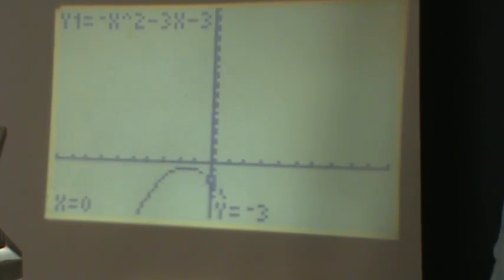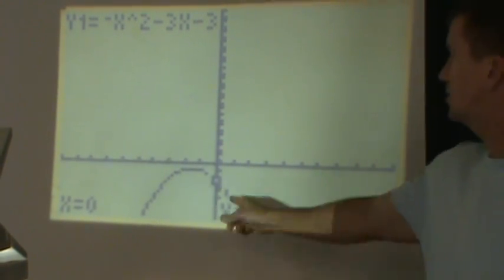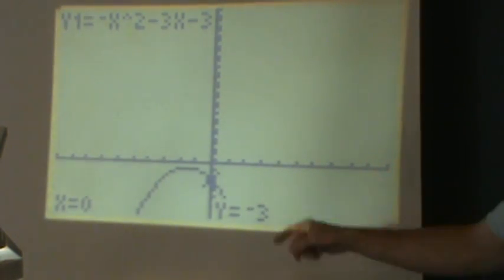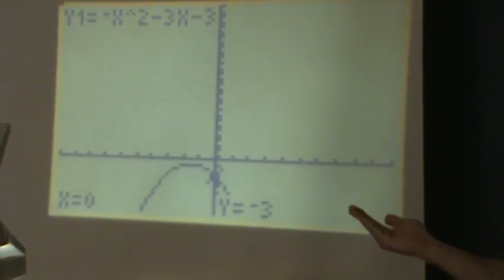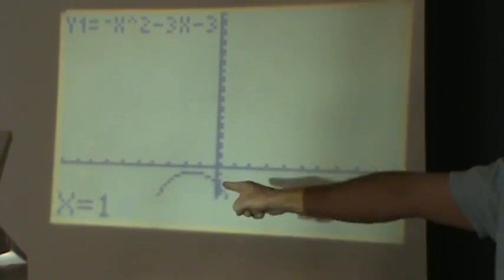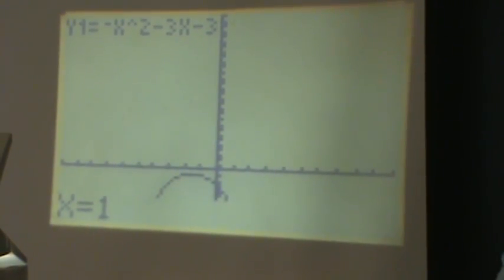I'm going to hit enter, and this is important, everyone. I have to punch into the calculator the value where I want the tangent line drawn. So I want to hit x equal to 1. I am just simply going to hit 1. See how that popped up? And the last thing I have to hit is enter.